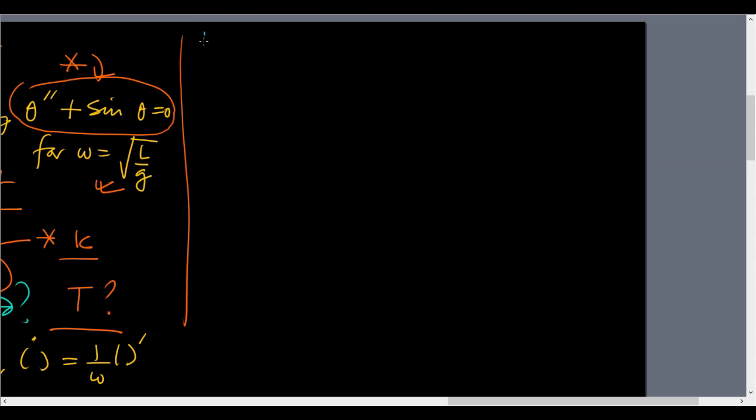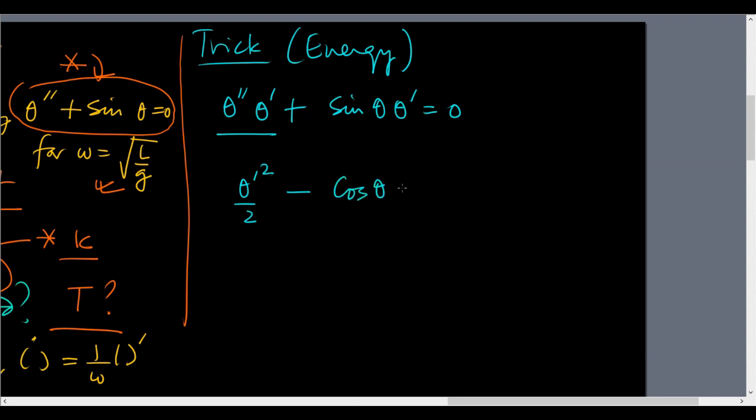The way to find the time period, there is a standard trick which uses energy. Theta double prime plus sin theta equals 0. What we do is we multiply by theta prime. This is the perfect derivative of theta prime squared by 2. This is the perfect derivative of minus cos theta. By initial conditions that constant is minus cos theta_0. Theta prime therefore is equal to plus or minus the square root of 2 times the square root of cos of theta minus the cos of theta_0.